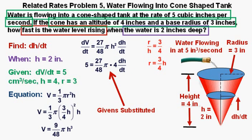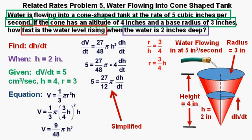We have 5 = 27/48 × π × 4 dh/dt. Simplifying the 4/48, we get 5 = 27/12 π dh/dt. And 27/12 simplifies to 9/4. So we have 5 = 9/4 π dh/dt.